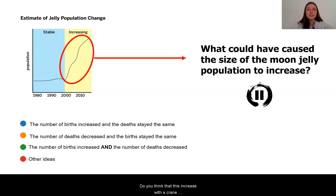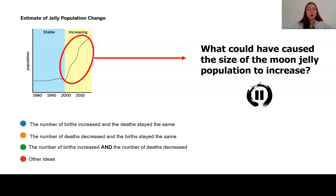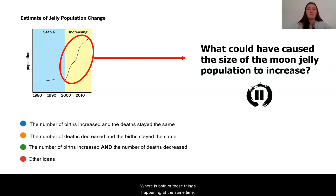Do you think that this increase was occurring because the number of births was increasing? Or perhaps that the number of deaths was decreasing? Or is both of these things happening at the same time? What is the evidence telling you?